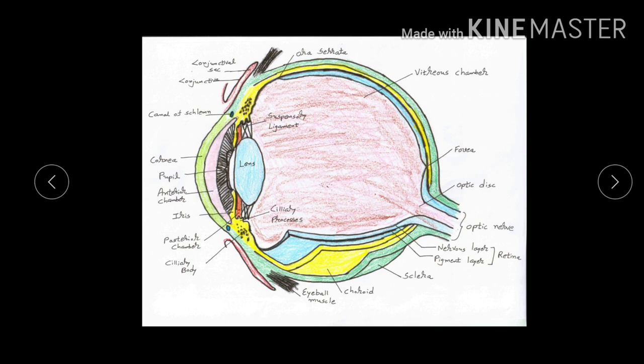The sclera, shown here in green color, looks white and forms five-sixths of the eyeball globe. The sclera is pierced by blood vessels and nerves, and the important nerve piercing the sclera is the optic nerve.